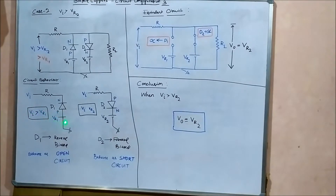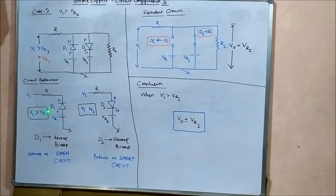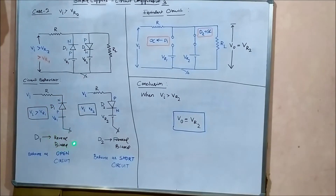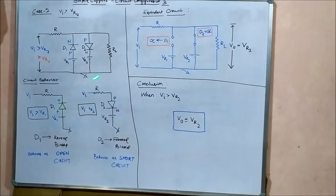For diode D1: the N-end is connected to Vi and P-end to Vr1. Since Vi is greater than Vr2, it is also greater than Vr1, meaning the N-end is at a higher potential Vi and the P-end at a lower potential Vr1. So D1 is reverse biased and behaves as an open circuit.